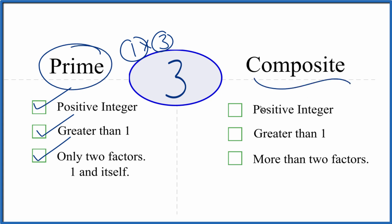But is it a composite number? Because it's a positive integer, it's greater than 1. But are there more than two factors? And we said there are only two factors. So 3 can't be a composite number. It is a prime number.